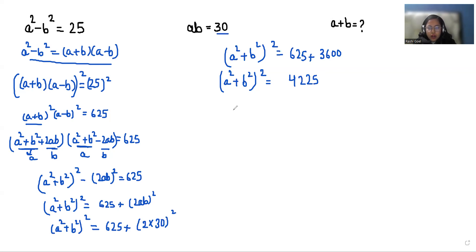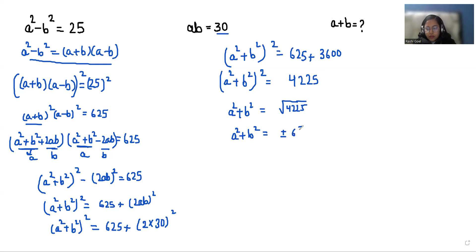Now we are doing square root on both sides. So a square plus b square is equal to plus or minus 65. Now we can use the formula a plus b whole square, that is a square plus b square plus 2ab. So the value of a square plus b square is plus or minus 65 plus 2 times 30.